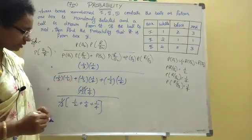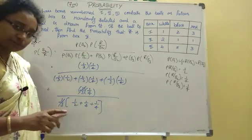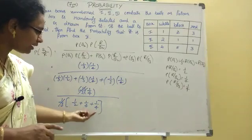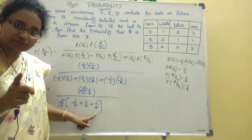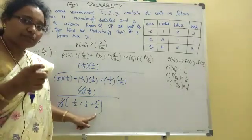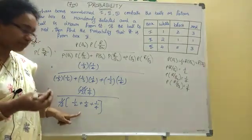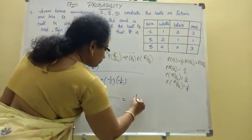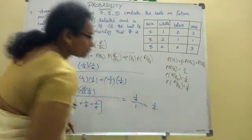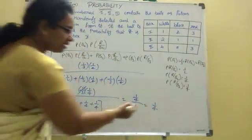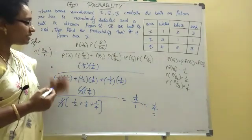The 1/3 in numerator and 1/3 common factor in denominator cancel. Remaining: 1/4 divided by (1/2 plus 1/4 plus 1/4). Now 1/4 plus 1/4 equals 1/2, and 1/2 plus 1/2 equals 1. So denominator equals 1. Therefore the final answer is 1/4. The probability that the red ball is from box two is 1/4.